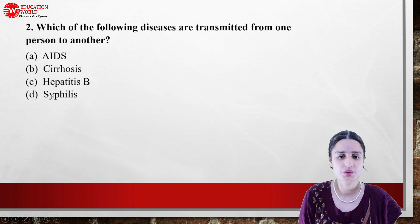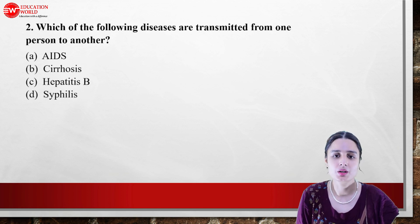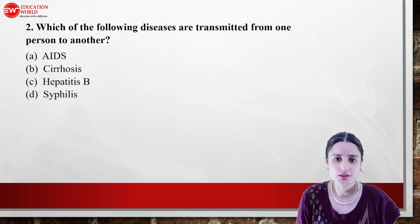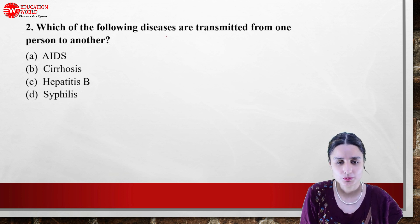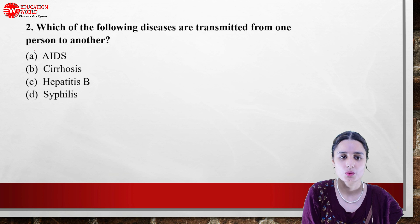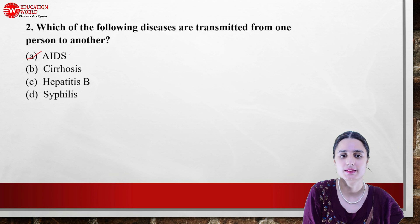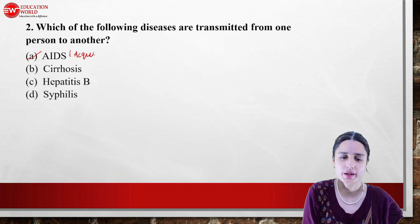Next question: which of the following diseases are transmitted from one person to another? Diseases that transmit from one person to another — which one is it? AIDS. AIDS full form is required.